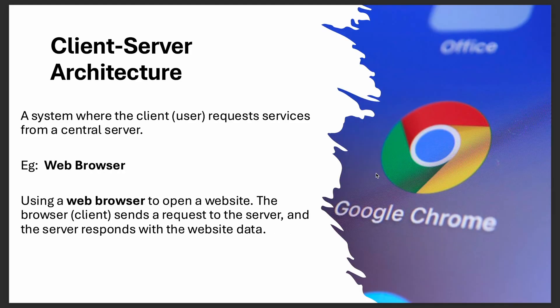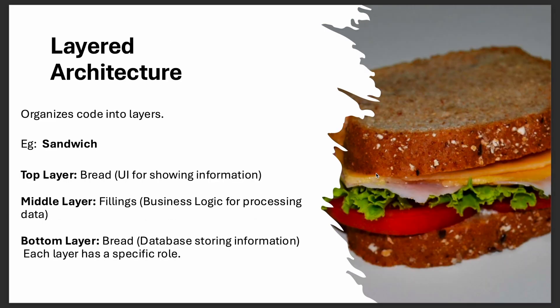Third is client-server architecture. This is a system where the client — meaning the user — requests services from a central server. For example, using a web browser: if we open google.com, the browser (the client) sends a request to the server that it wants to open google.com, and the server responds with the website data. That's the client-server architecture.